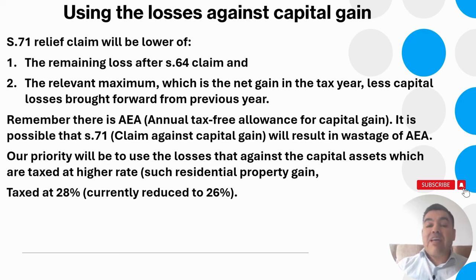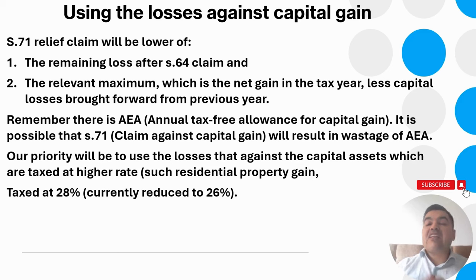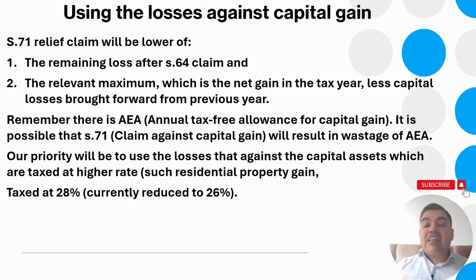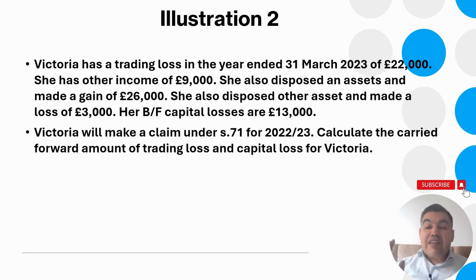The priority should be to use losses against capital assets taxed at the higher rate. For example, disposing of UK property attracts CGT at 28% (recently reduced to 26%). Shares are taxed at 20%, and Business Asset Disposal Relief reduces the rate to only 10%. Our aim is to set trading losses against those assets taxed at the higher rate.